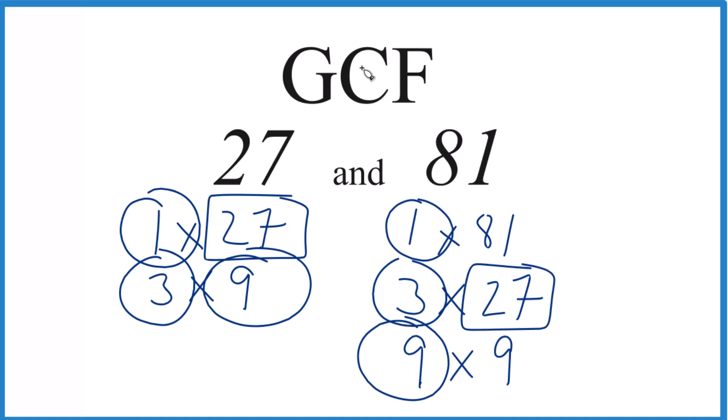So 27 divides evenly into 27 and 81. That makes 27 the greatest common factor for 27 and 81. You can do this other ways, like prime factorization, but these aren't really big numbers, so this is usually a lot easier. This is Dr. B, thanks for watching.